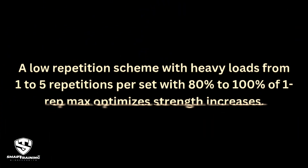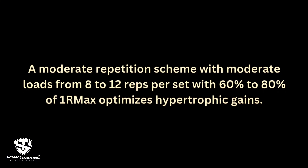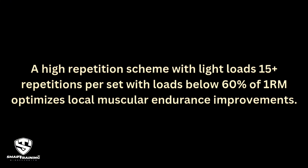Muscle loading is required to achieve different adaptations. For example, a low repetition scheme with heavy loads — one to five reps per set at 80 to 100% of one rep max — optimizes strength increases. A moderate repetition scheme of 8 to 12 reps per set at 60 to 80% of one rep max optimizes hypertrophic gains. A high repetition scheme of 15-plus reps per set below 60% of one rep max optimizes local muscular endurance.